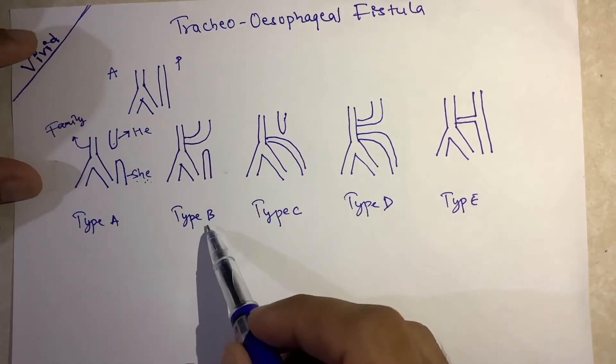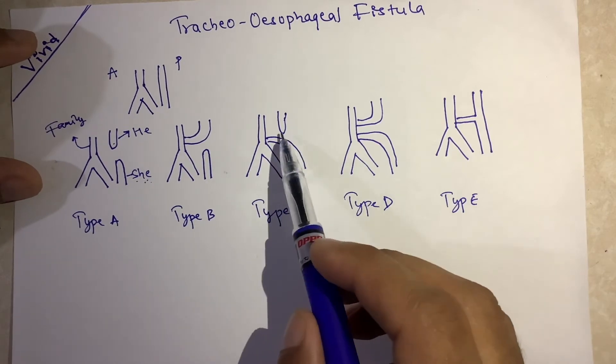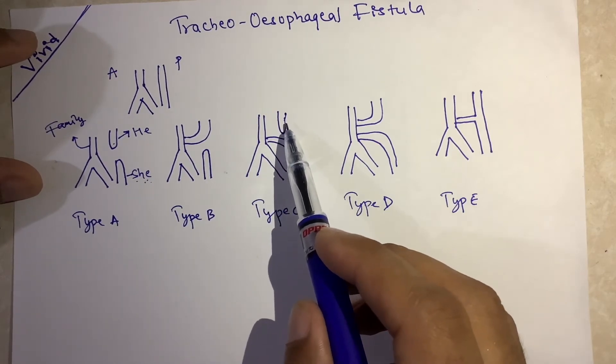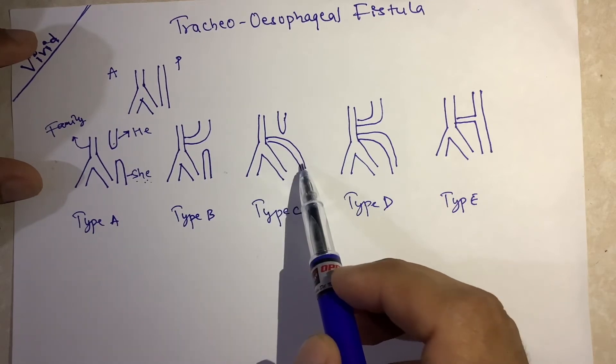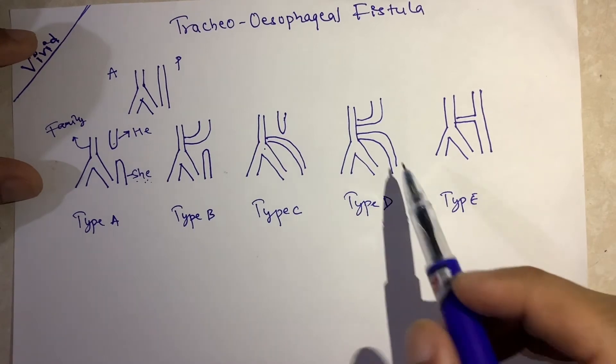This forms type B. In type C, after the boy tells about their relationship, now it's the time of the girl to say to their family.